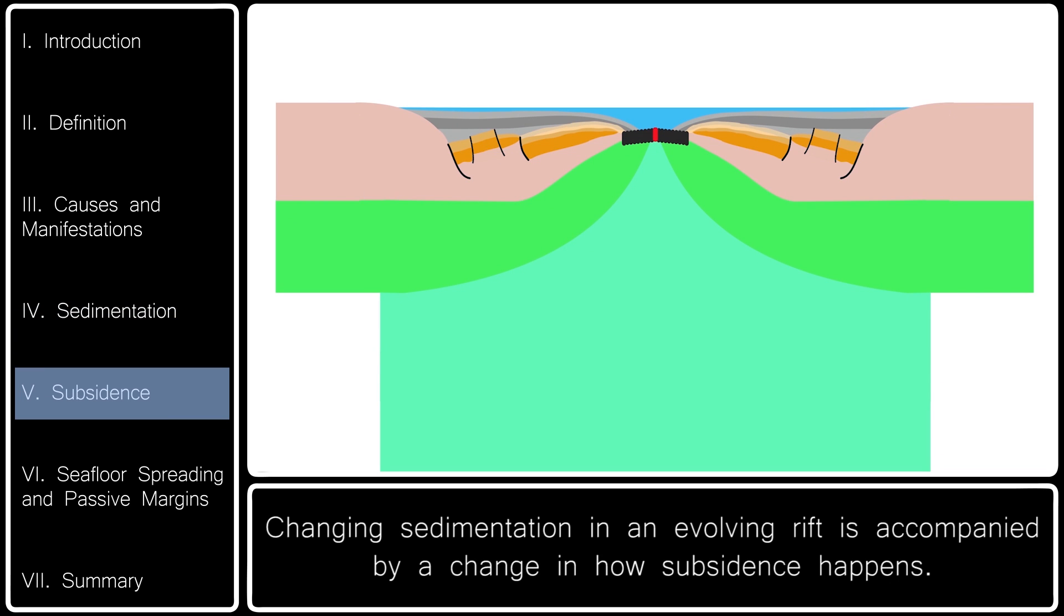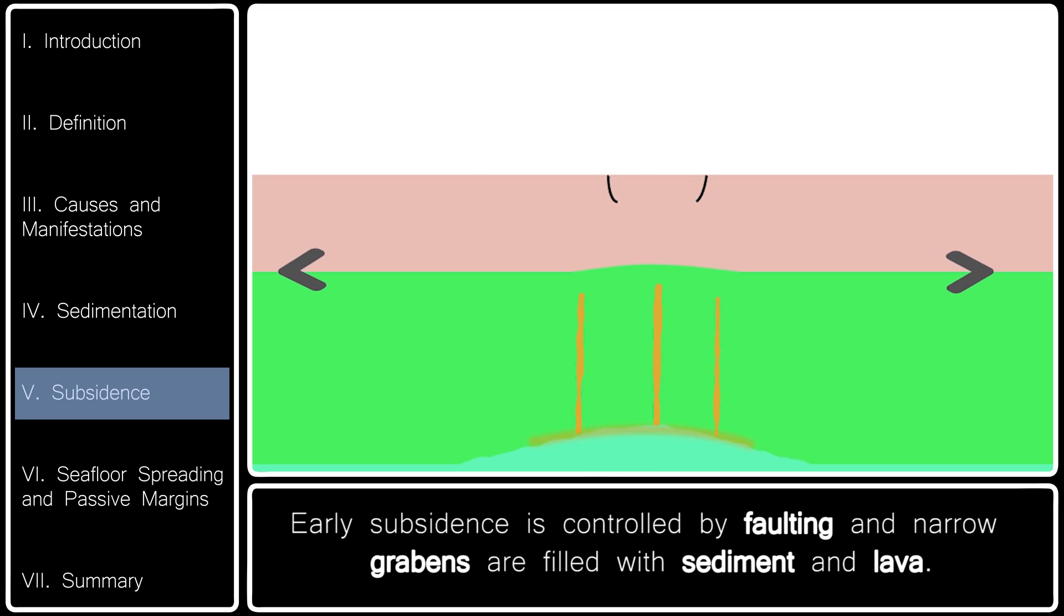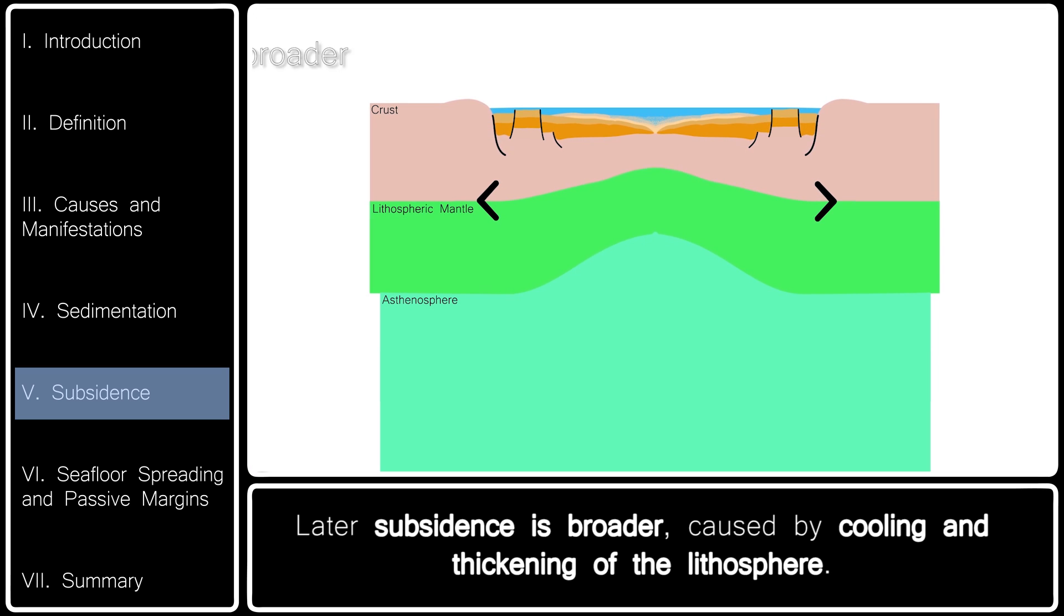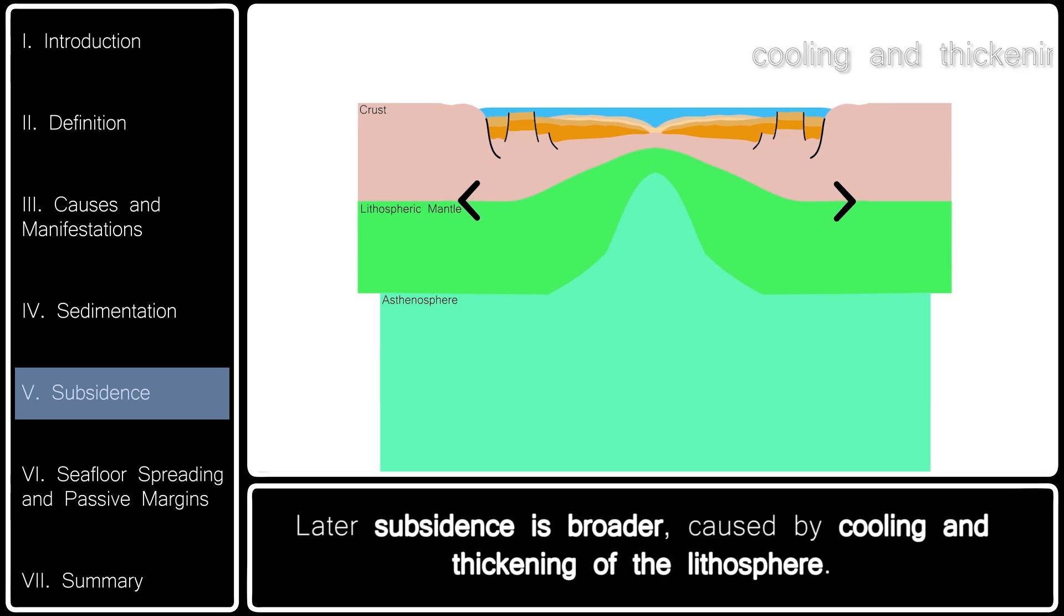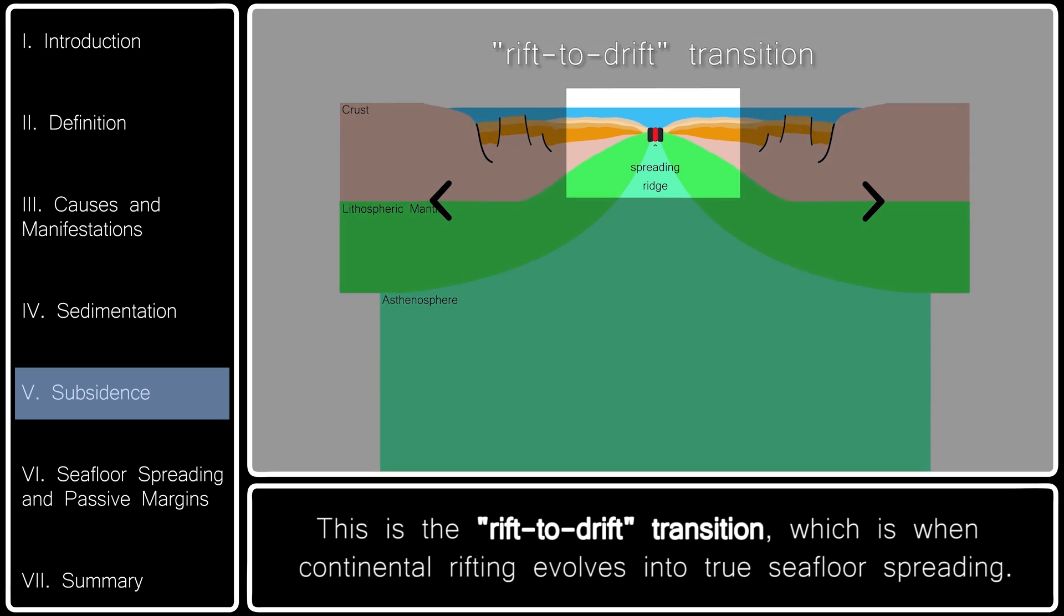Changing sedimentation in an evolving rift is accompanied by a change in how subsidence happens. Early subsidence is controlled by faulting, and narrow grabens are filled with sediment and lava. Later subsidence is broader, caused by cooling and thickening of the lithosphere. This is the rift-to-drift transition, which is when continental rifting evolves into true seafloor spreading.